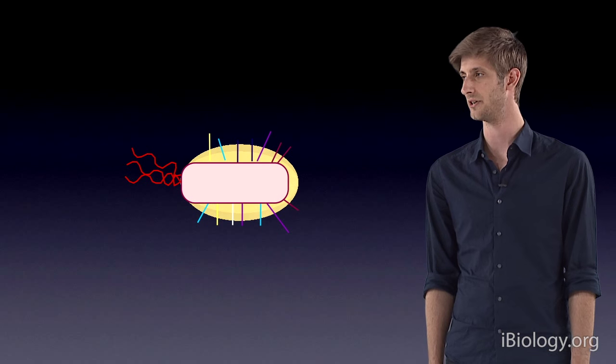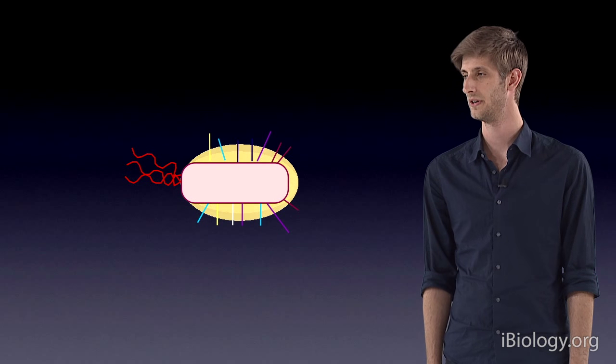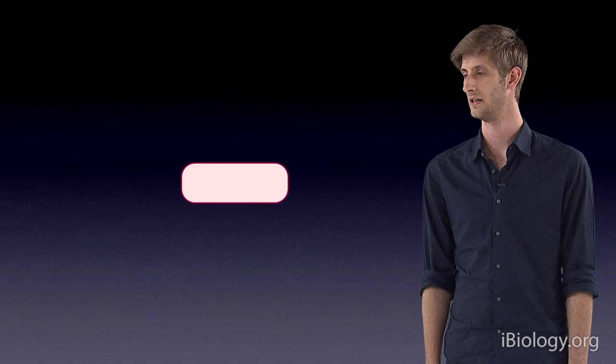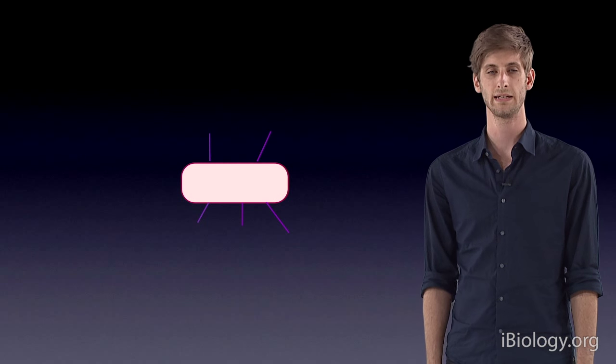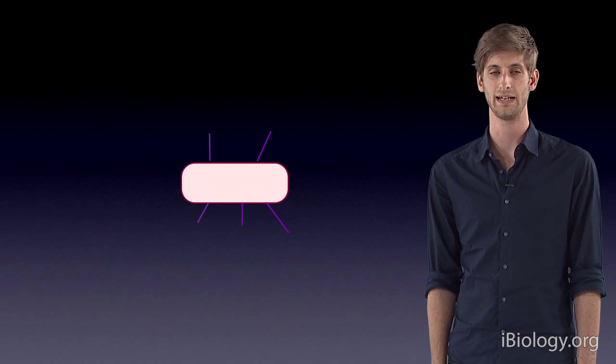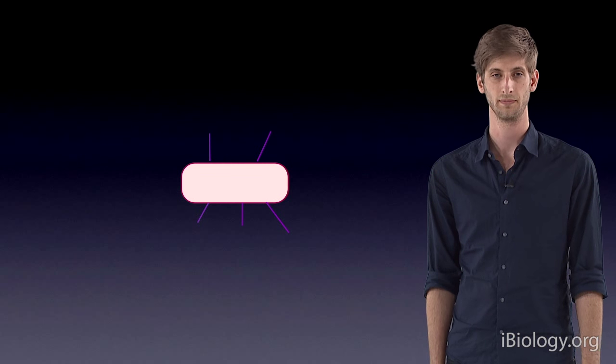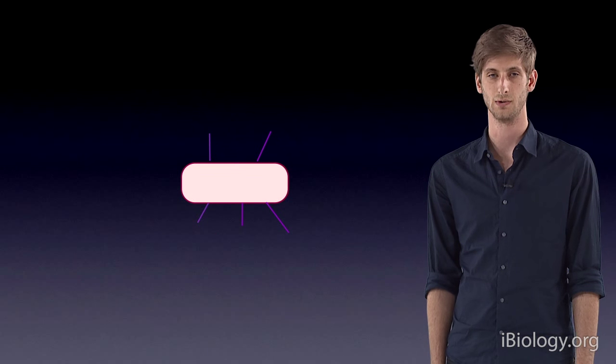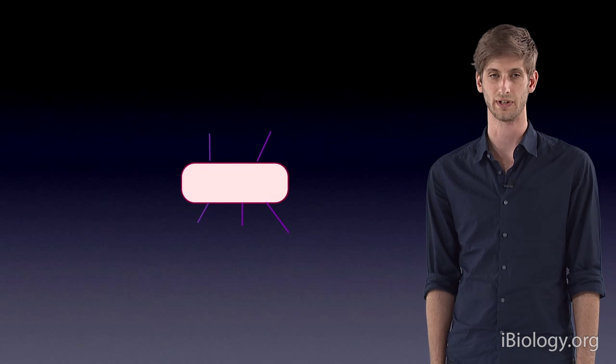In order to control what our bacteria sticks to, we remove cell surface proteins, such as adhesins and flagella. Into this naked strain, we could implant adhesin genes of our desire. This allows us to control exactly what our bacteria will stick to.